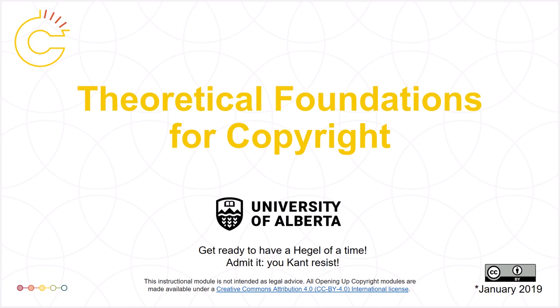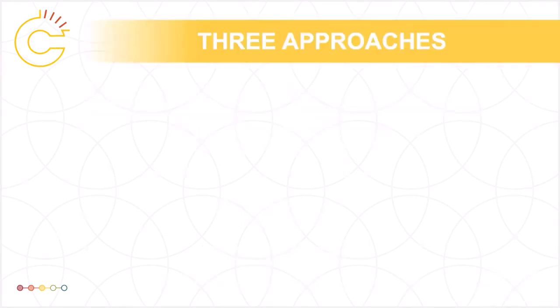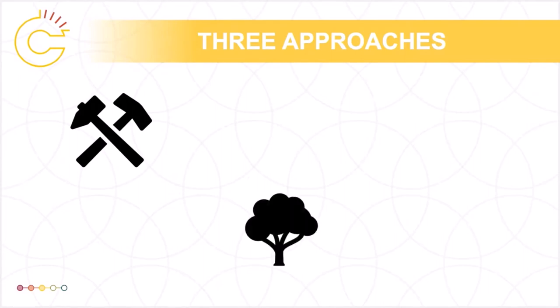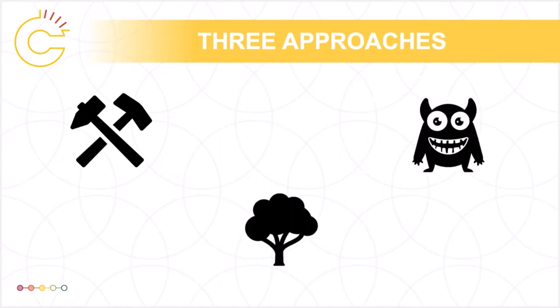Hello, and welcome to the University of Alberta's Opening Up Copyright Instructional Module on Theoretical Foundations for Copyright. In a Western context, there are three major approaches to the theories that justify copyright: the utilitarian or consequentialist approach, the natural rights approach, and the personality-based approach.